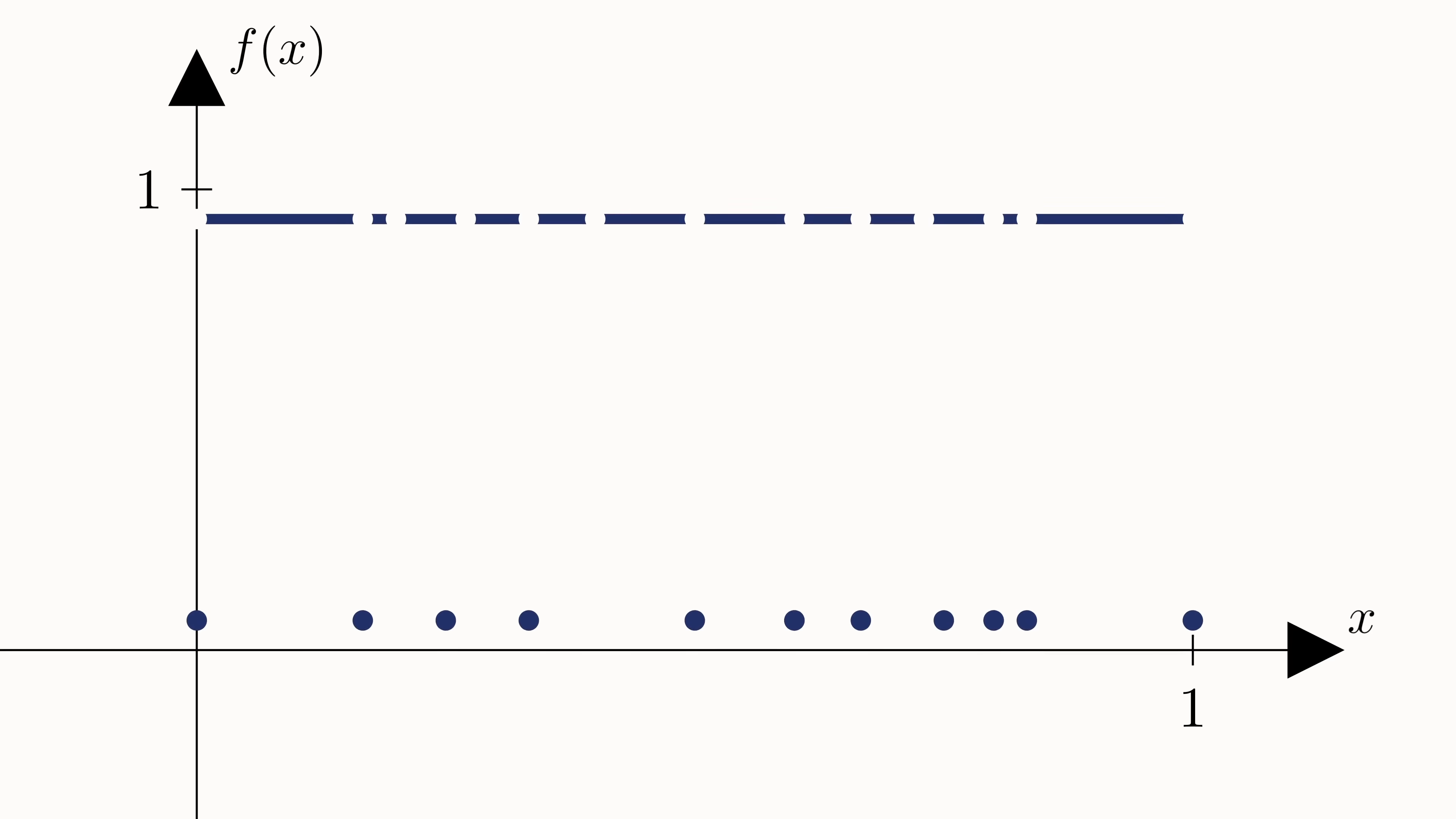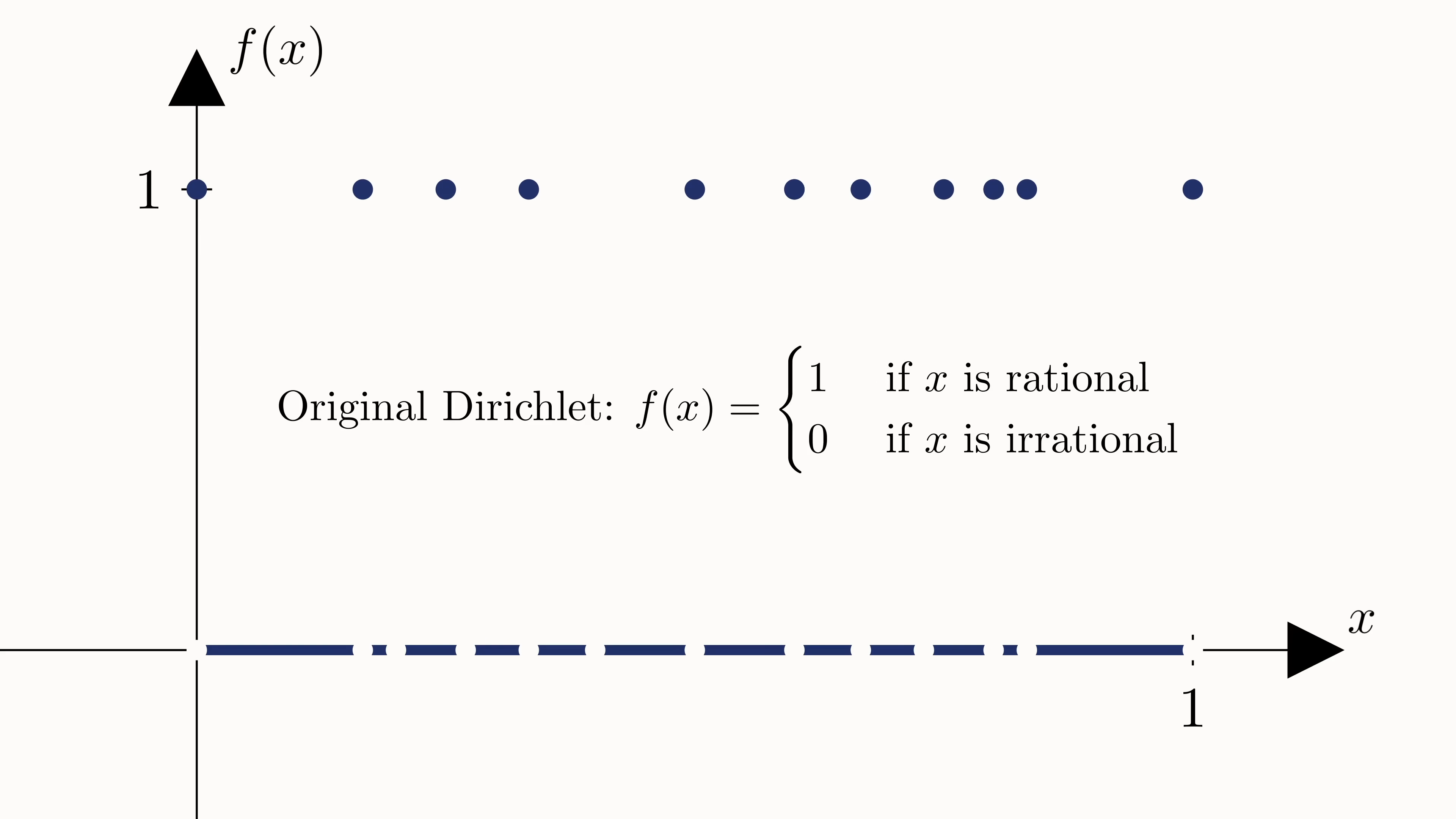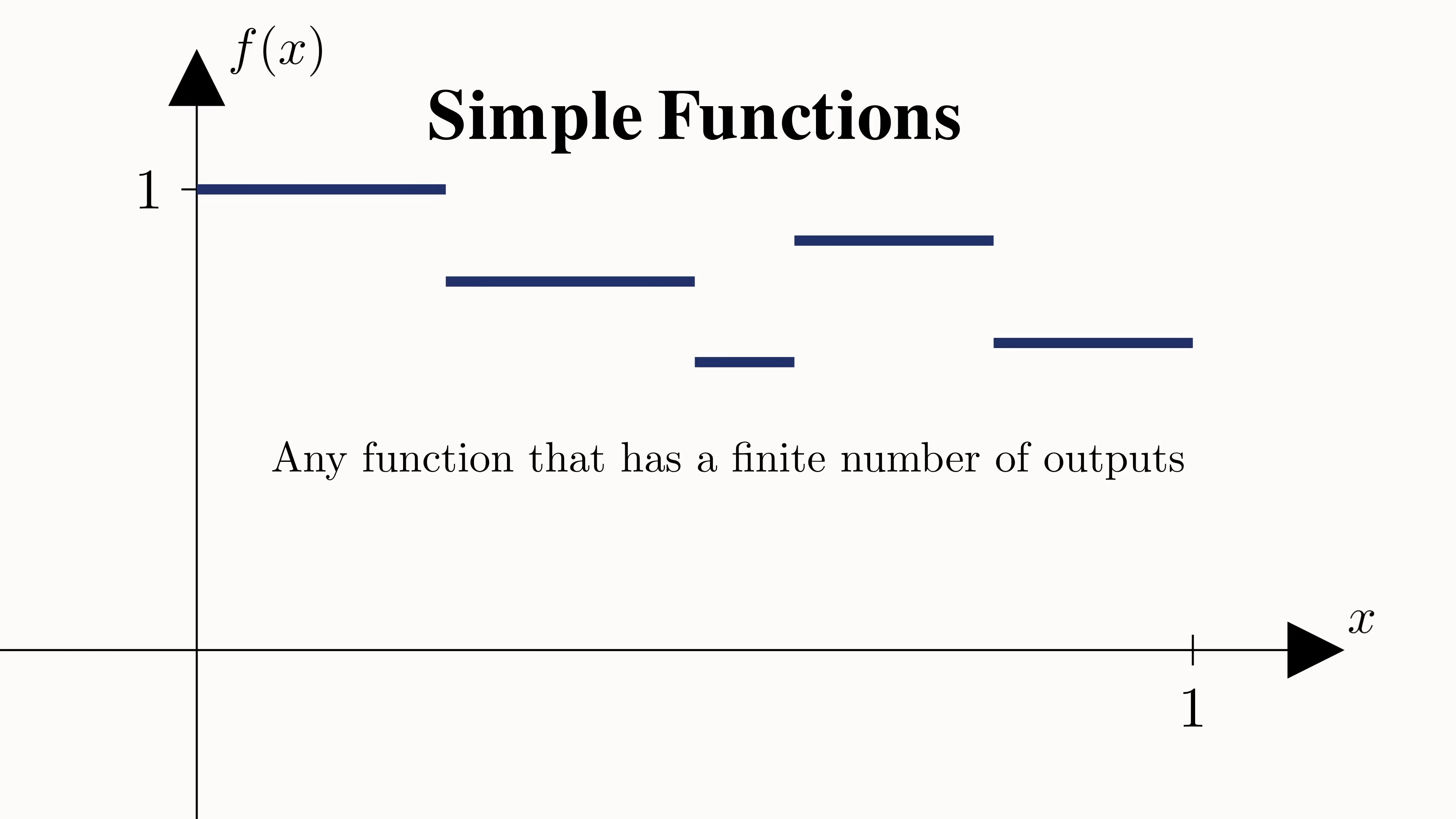Now, even though it was the limit of a sequence of functions, it turns out that the Dirichlet function is an example of what mathematicians call a simple function. That is, a function that takes on some finite number of values. Here, we have only two values, but for an arbitrary simple function, we can have any finite number of values.